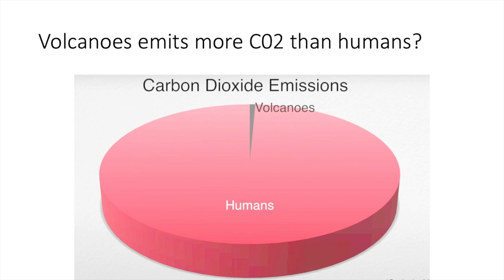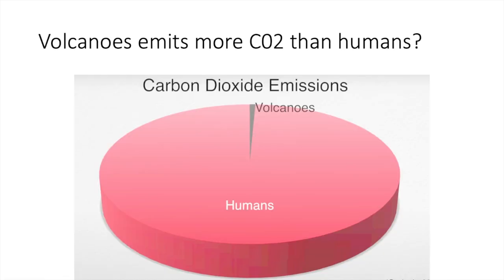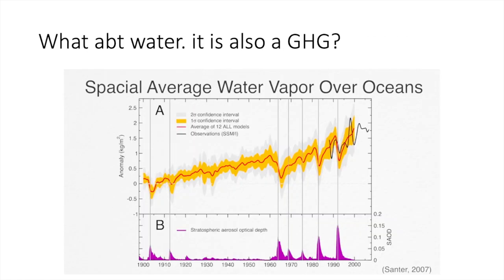Another myth: volcanoes emit more CO2 than humans. That's a wrong statement. We can see that the average per-year emission of volcanic CO2 versus human CO2 has a huge gap — humans emit far more CO2. While volcanoes do emit CO2 — when limestone undergoes subduction and CaCO3 breaks into CaO plus CO2, that CO2 is released — the amount is much less than human emissions.